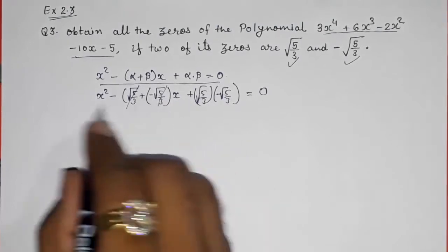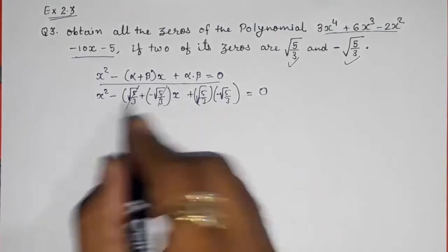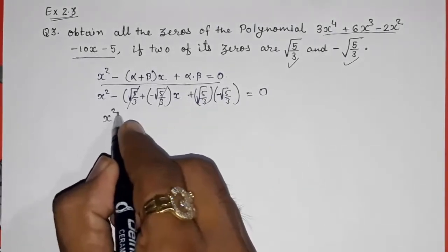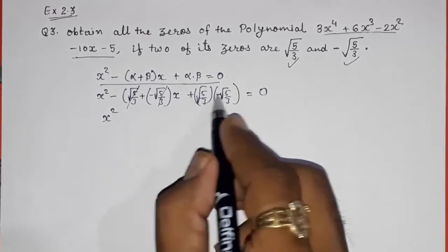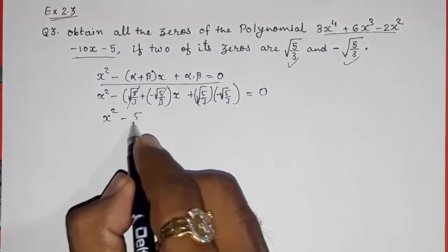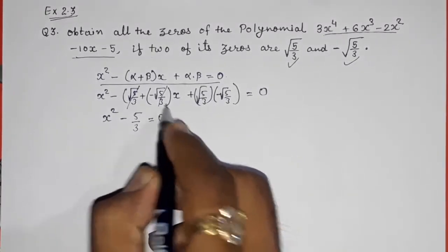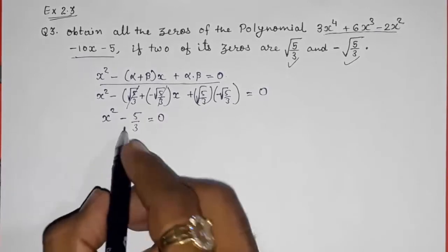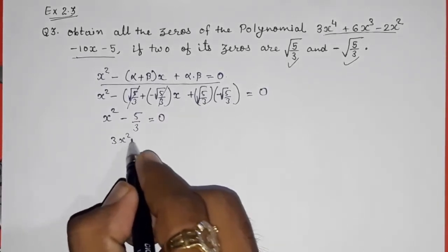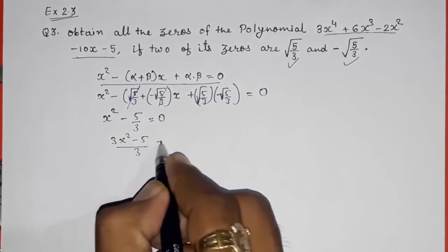So what will happen? This will get cancelled. So 0 minus x, that will be 0x, and this will become plus minus minus 5 by 3 is equal to 0. Now you can take out LCM also: 3x square minus 5 upon 3 is equal to 0.